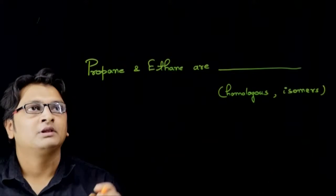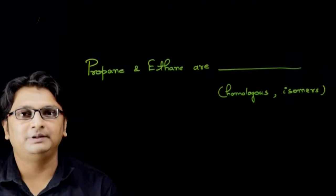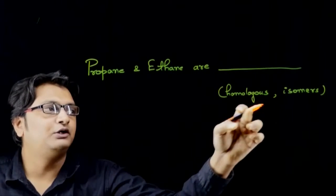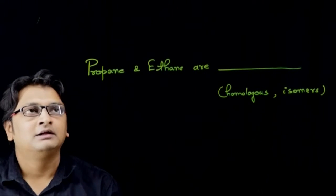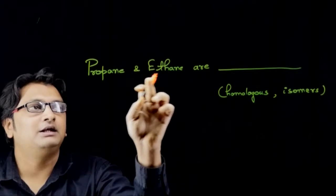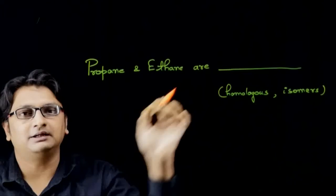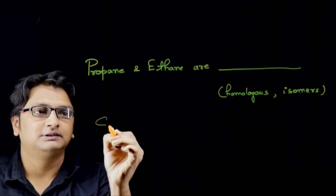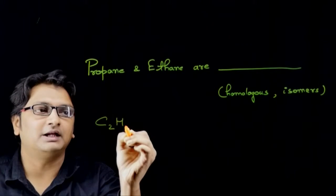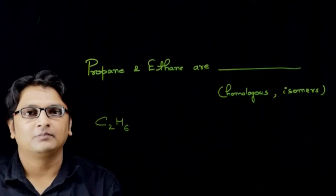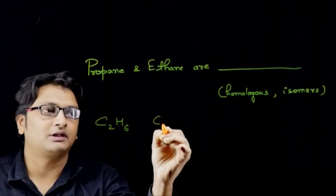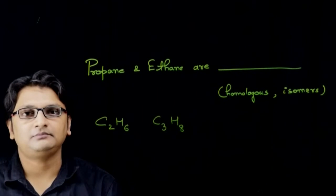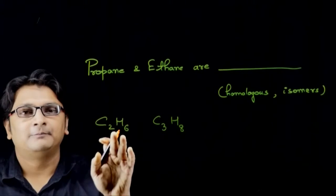Welcome back. In this question we have to complete the statement by filling it properly. There are two options given. They are saying propane and ethane are blank. So ethane means C2H6, propane means C3H8.